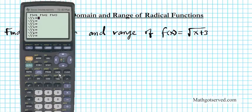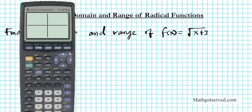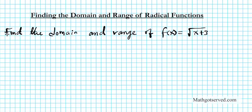If you want to graph this, we just have to enter the square root — second function x squared, which is the square root function — x plus 3, then enter and graph. You can see what the graph looks like. It's a typical radical function shifted three units to the left.